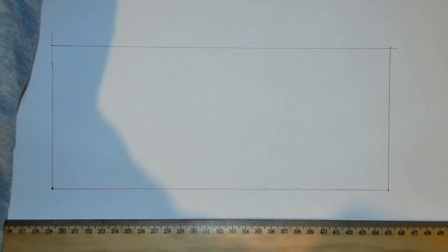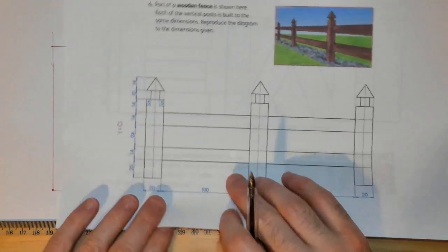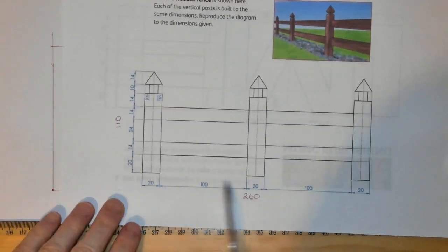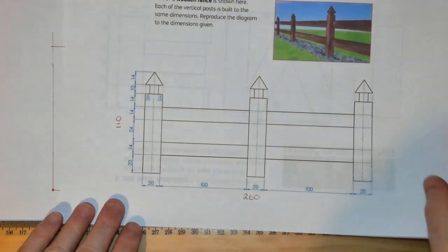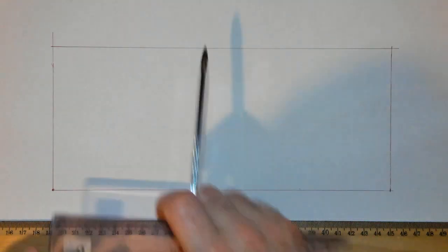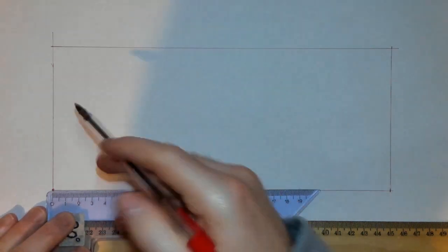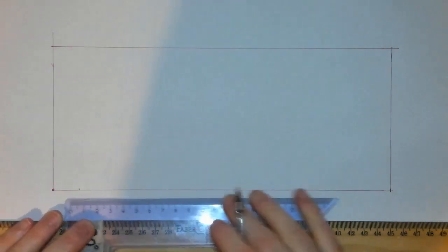Now what I want to do is I want to put in all of my horizontal measurements. So I have 20, 120, 120. I'm going to put all of those in. Going along the bottom I'm going to mark 20 millimeters, then I'm going to mark 100.